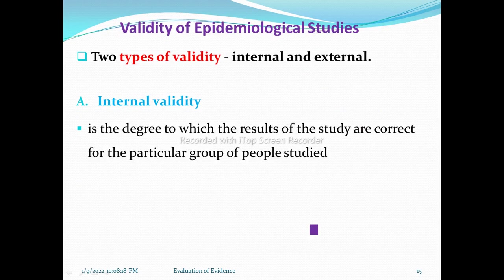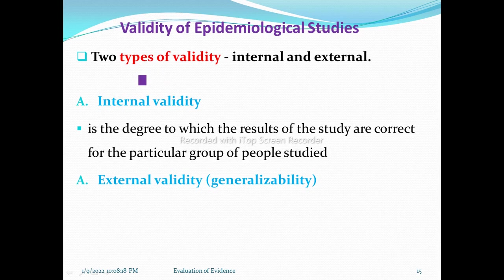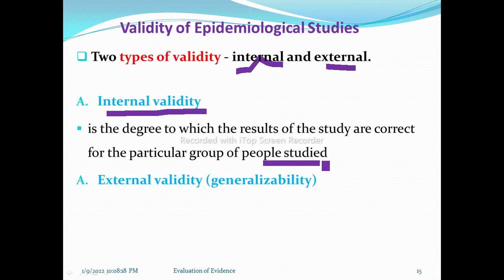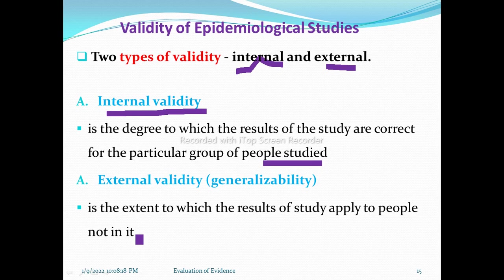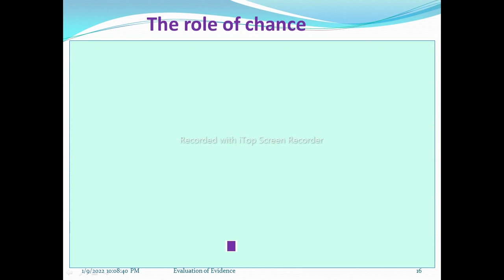Regarding the validity of epidemiological studies, validity can be divided into internal validity and external validity. Internal validity is the degree to which the results of the study are correct for the particular group of people studied. External validity — also known as generalizability — is the extent to which the results of the study apply to people not in the study, comparable to the source population or other studies done in different parts of the world.